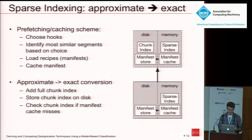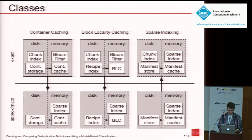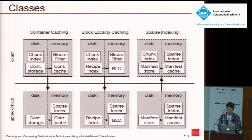For sparse indexing, we created an exact version by adding a full-sized chunk index that resides on disk. We could have expanded the sparse index into a full-sized chunk index, but we think the in-memory structure to determine the most similar segments is an important part of the prefetching scheme. With this, we developed two yet unexplored combinations: exact sparse indexing and approximate block locality caching. This now allows us to perform an evaluation focusing on the core mechanisms — container caching, block locality caching, and sparse indexing.